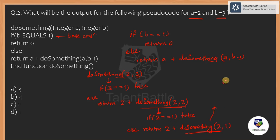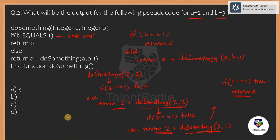Now we recollect all results: return 0 from the base case, 0 plus 2 is 2, then 2 plus 2 gives 4. So we get 0 plus 2 plus 2 which equals 4. The final answer is 4, so option B is correct. This is a recursion-based question.